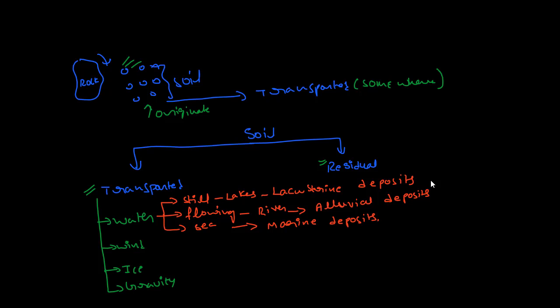If the soil is transported by wind, they are called aeolian soils. If they are transported by ice, they are called glacial deposits. If they are transported by gravity, they are called colluvial soils or deposits.